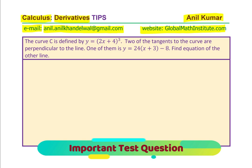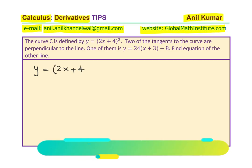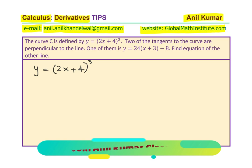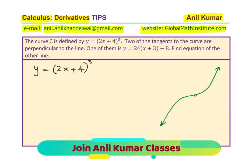Let us analyze and figure out how to solve this question. We are given the equation of the curve as y equals to (2x + 4) cubed. That is a cubic function — let me sketch it. It is a cubic curve where the zero, the x-intercept, will be at the point x equals minus 2.